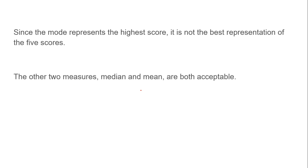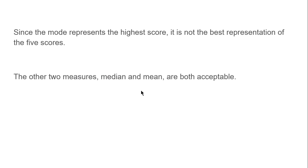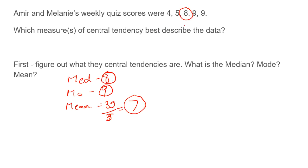Now if we think about this, since the mode represents the highest score, it's not really the best representation of the five scores. You don't want to say a 9 best represents all five quizzes because it's the highest score and it really doesn't. But if you said 7 or 8, that would be a good representation of that data because that's kind of about where they got every time.